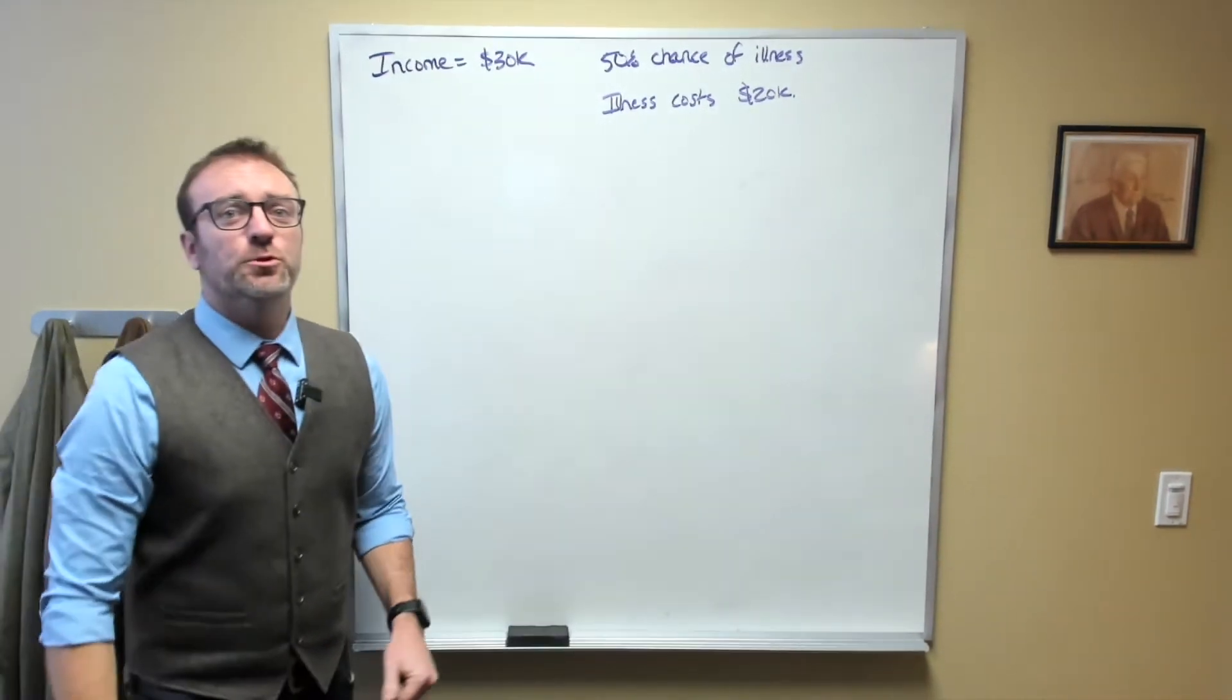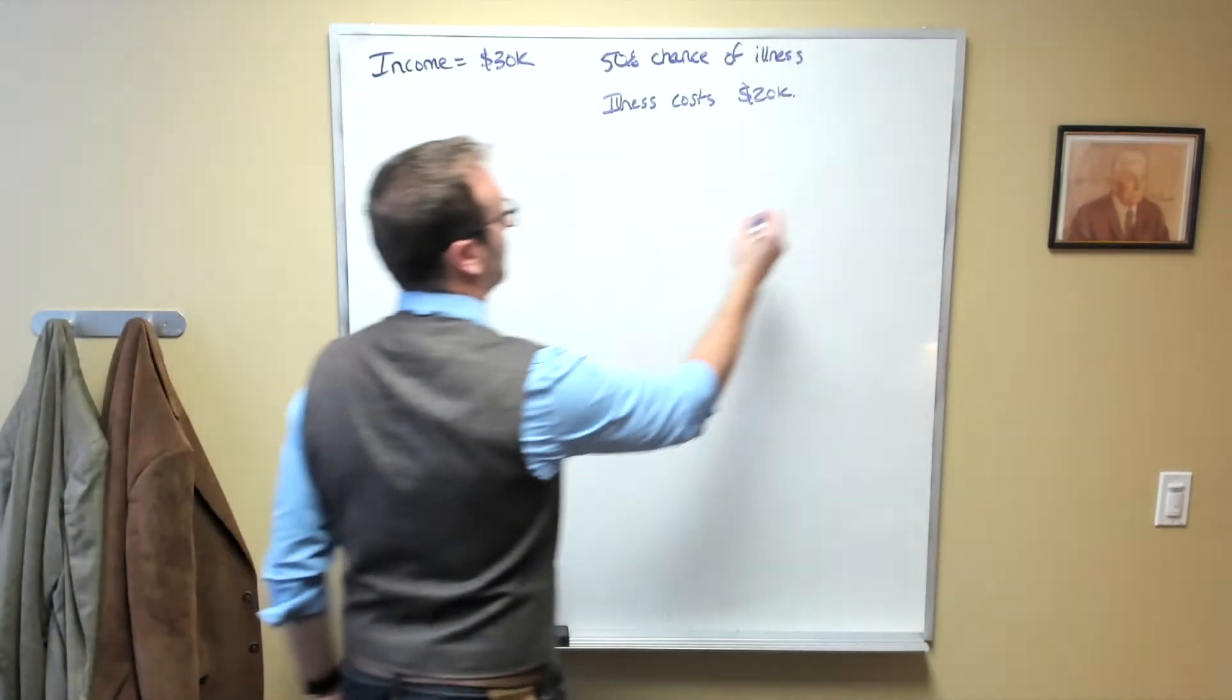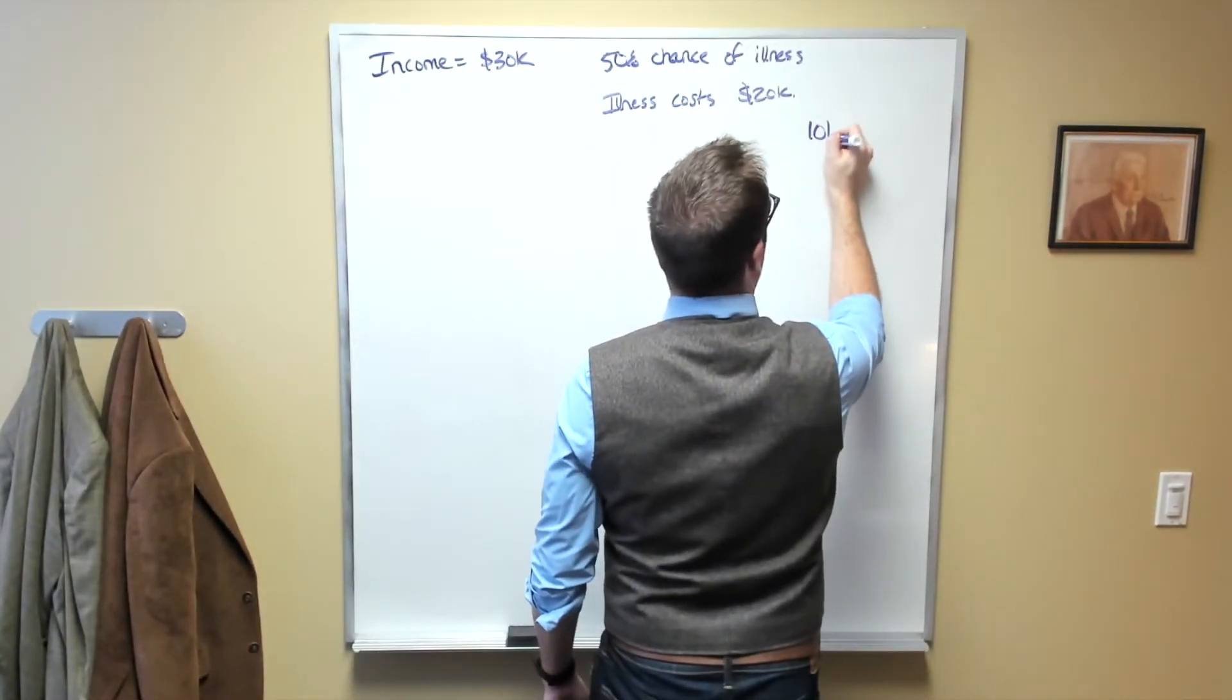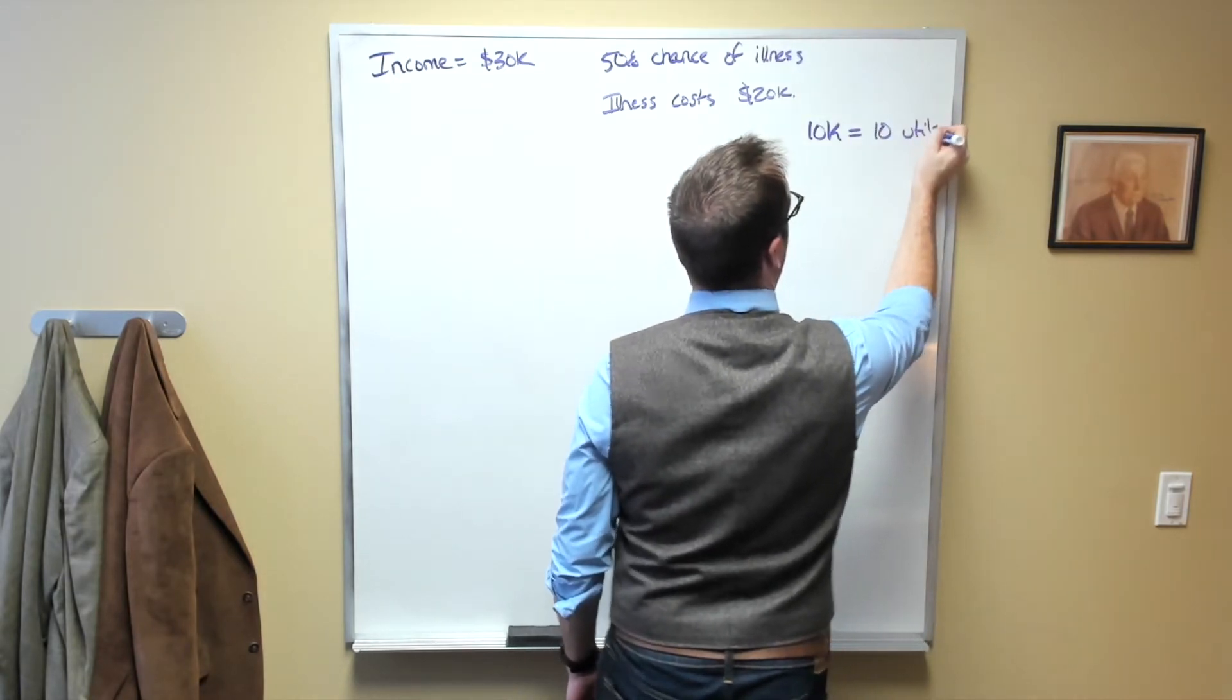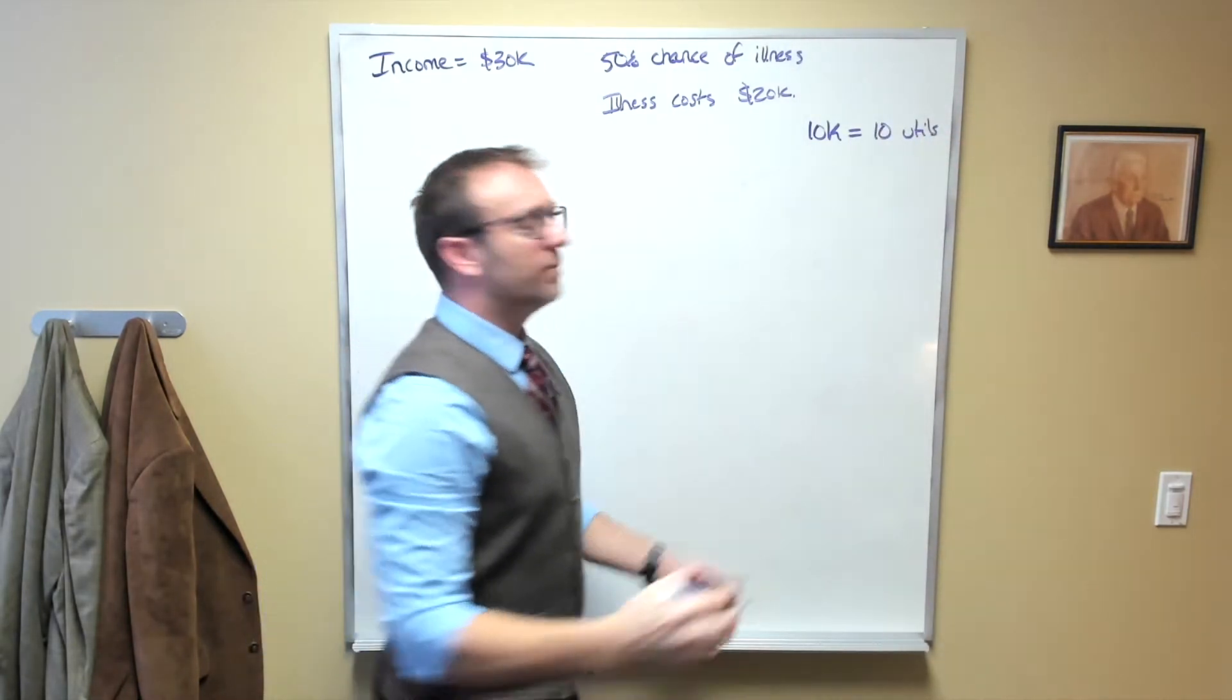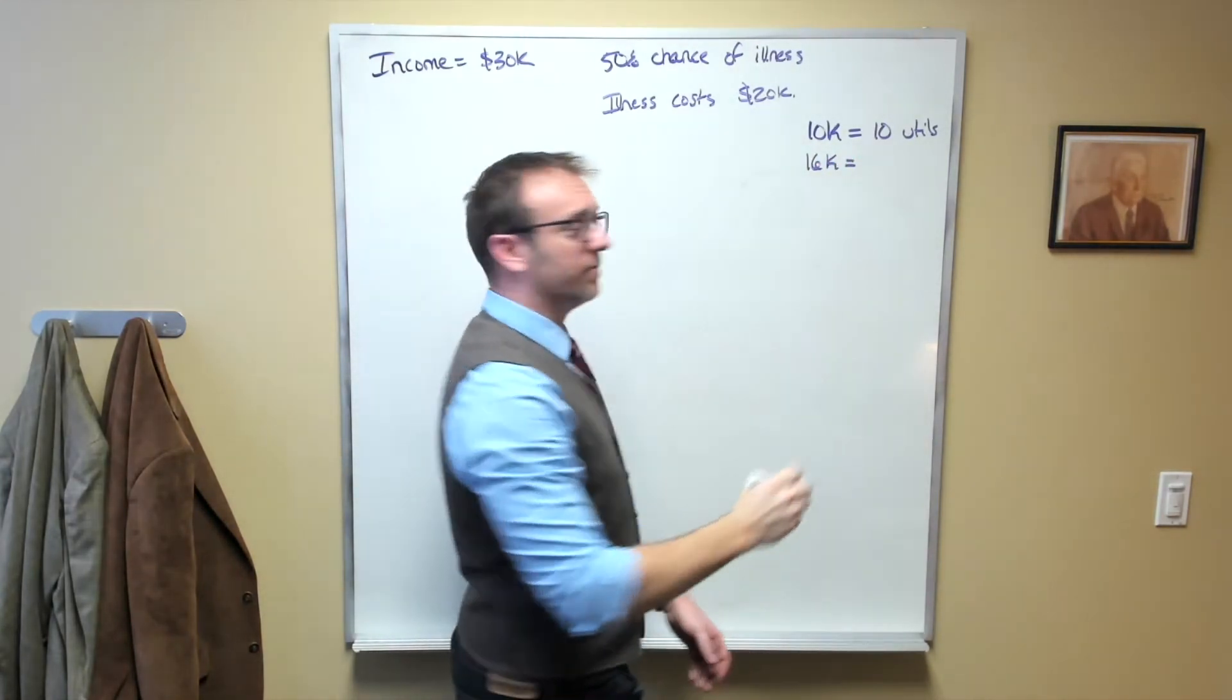Let's assume that your utility from income is given by the following. If you have $10,000 of income, that would be equal to 10 utils. If you have $16,000, that would be equal to 14 utils.